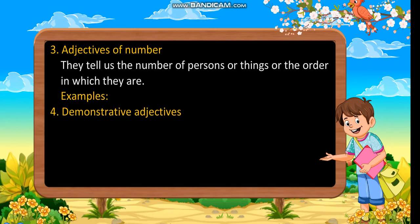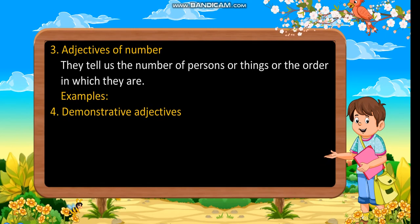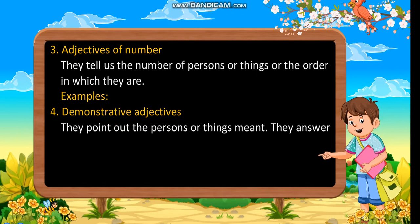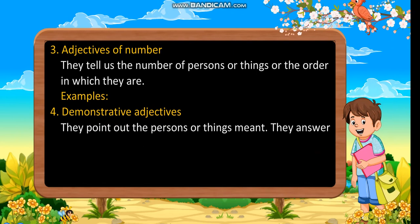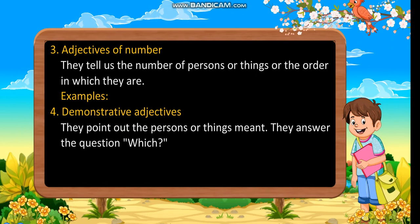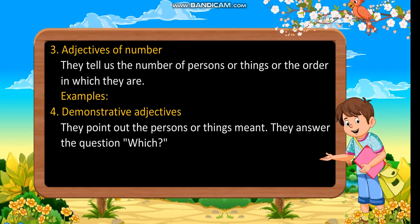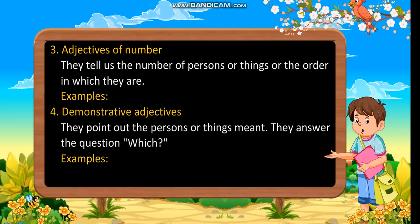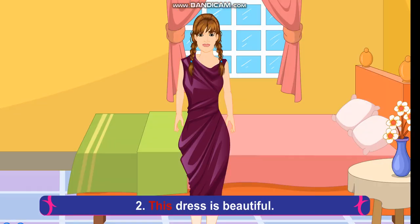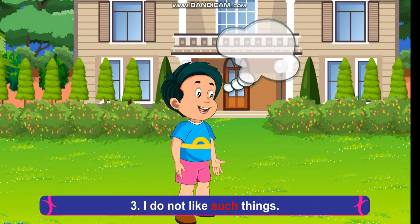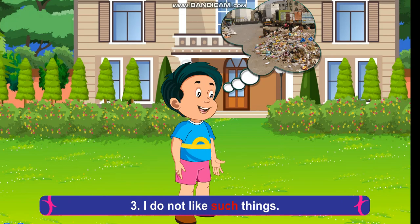Demonstrative adjectives: they point out the persons or things meant. They answer the question 'which'. Examples: That tree is very tall. This dress is beautiful. I do not like such things.